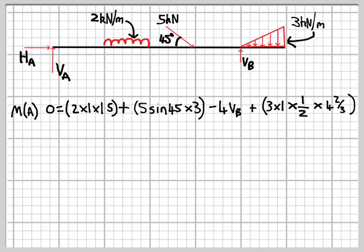The second term in the equation, the 5 sin 45 times 3, that's the moment due to the point load. So we want the vertical component of that point load, so that's why there's the sin 45 in there. And the lever arm is 3 metres, so it's acting 3 metres from A.